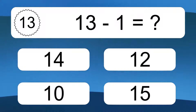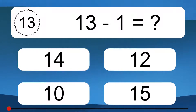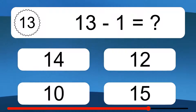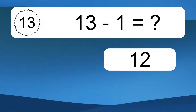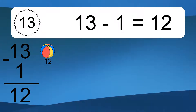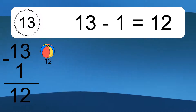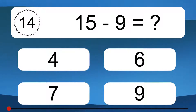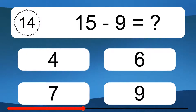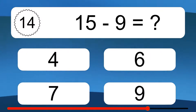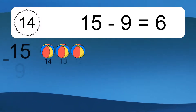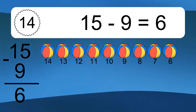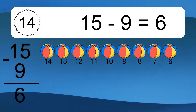13 minus 1 equals what? 13 minus 1 equals 12. Let's count it: 12. 15 minus 9 equals what? 15 minus 9 equals 6. Let's count it: 14, 13, 12, 11, 10, 9, 8, 7, 6.